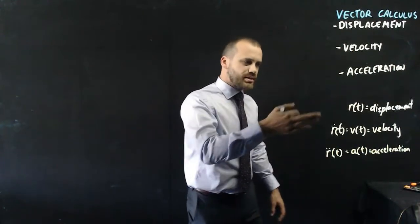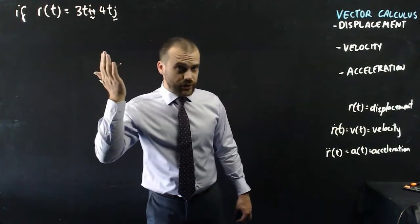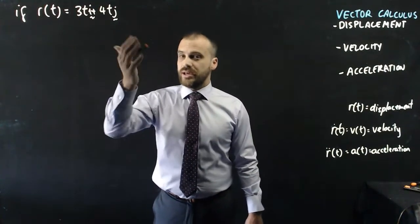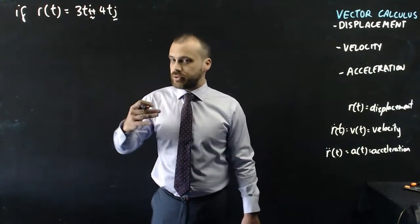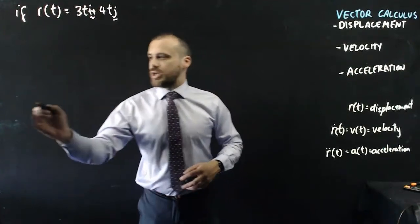The big difference here is that these are dealing with them in multiple directions. That is, if your displacement vector is something like 3ti plus 4tj, it tells you the displacement of your particle at those times, both in the i direction and in the j direction.